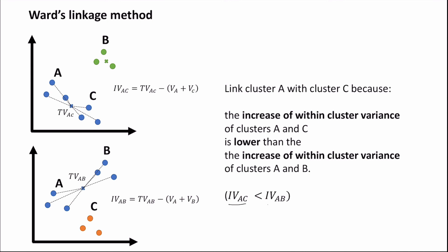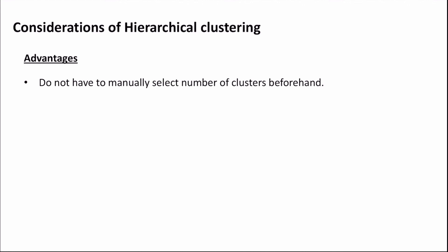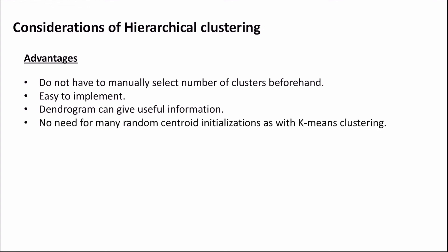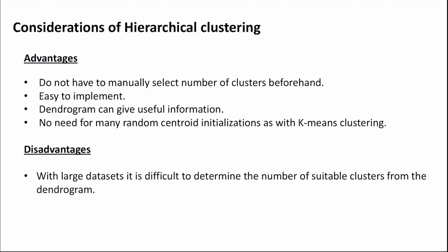Some advantages of hierarchical clustering are: we do not have to manually select the number of clusters beforehand, as we do with k-means clustering. It's also fairly easy to implement — there are many libraries such as scikit-learn where we can import a hierarchical clustering algorithm and apply it to a dataset. The dendrogram produced can give useful information such as the distance between clusters. There is also no need for many random centroid initializations, as required with k-means clustering.